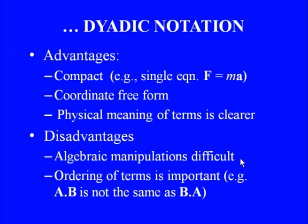The disadvantages of dyadic notation are that algebraic manipulation is difficult — we must remember various formulae to manipulate vector or tensor equations. Ordering of terms is very important; for example, A·B is not the same as B·A for tensor quantities. The expanded form depends on the choice of coordinate system — Cartesian, cylindrical polar, or spherical polar.